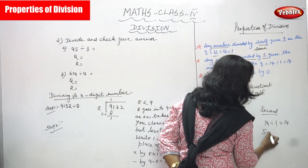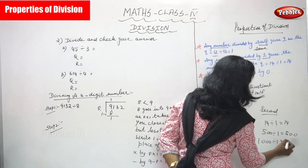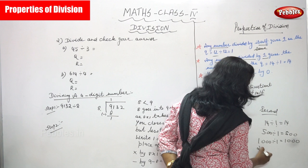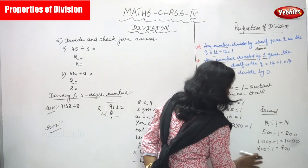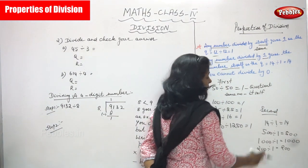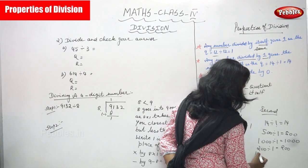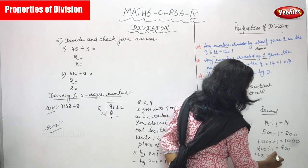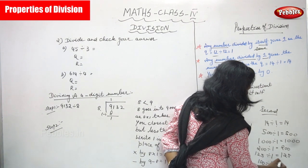For example: 500 divided by 1 gives 500; 1000 divided by 1 gives 1000; 200 divided by 1 gives 200; 125 divided by 1 gives 125; and 100 divided by 1 gives 100. Any number divided by 1 gives the same number itself as the quotient.